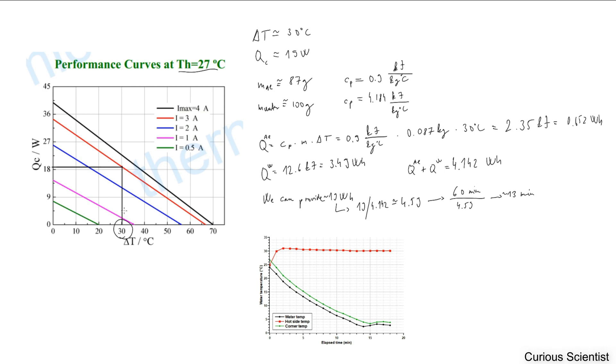We said we will go for 30 degrees delta T. As I showed in my previous video, we have to draw the vertical line, go up and see where it cuts the desired current line.